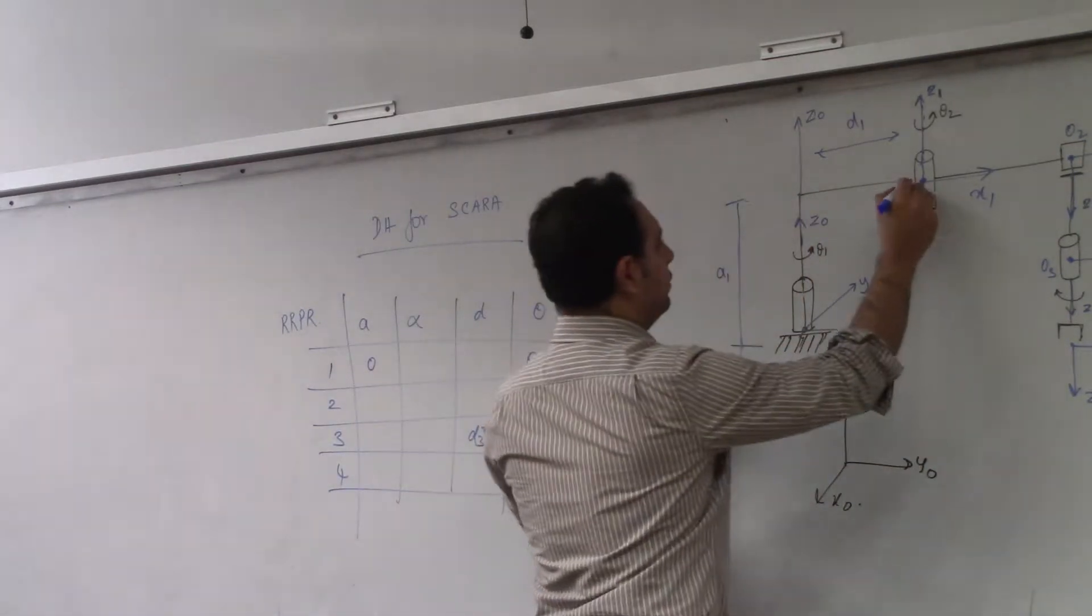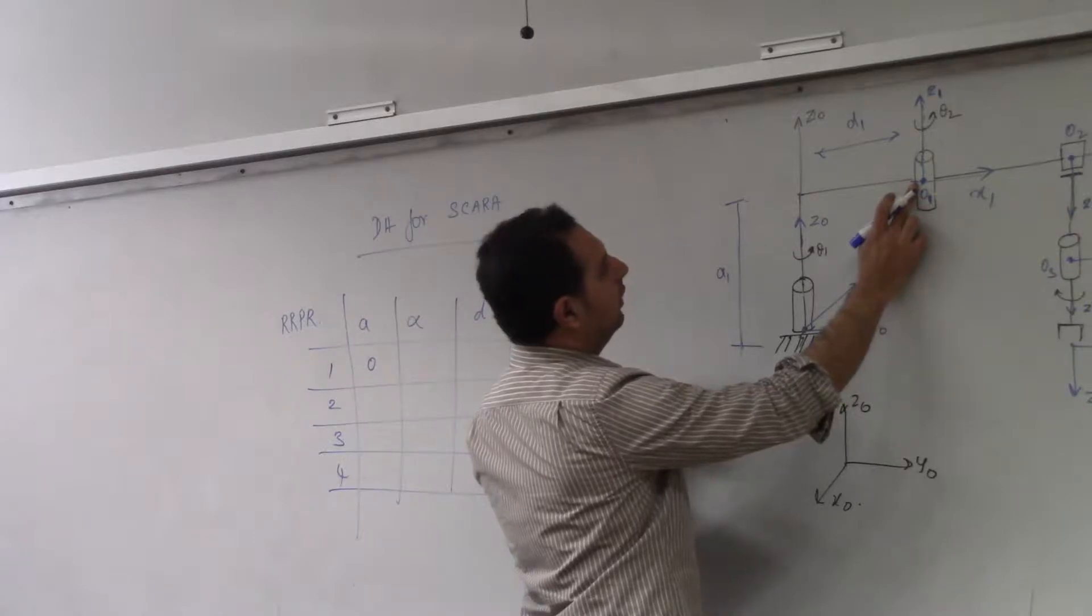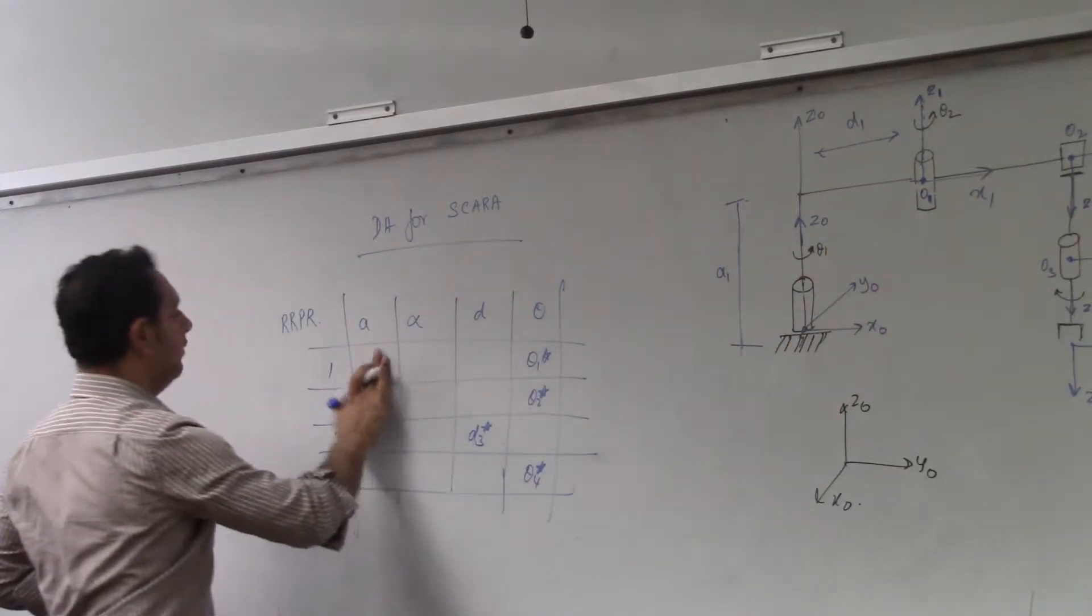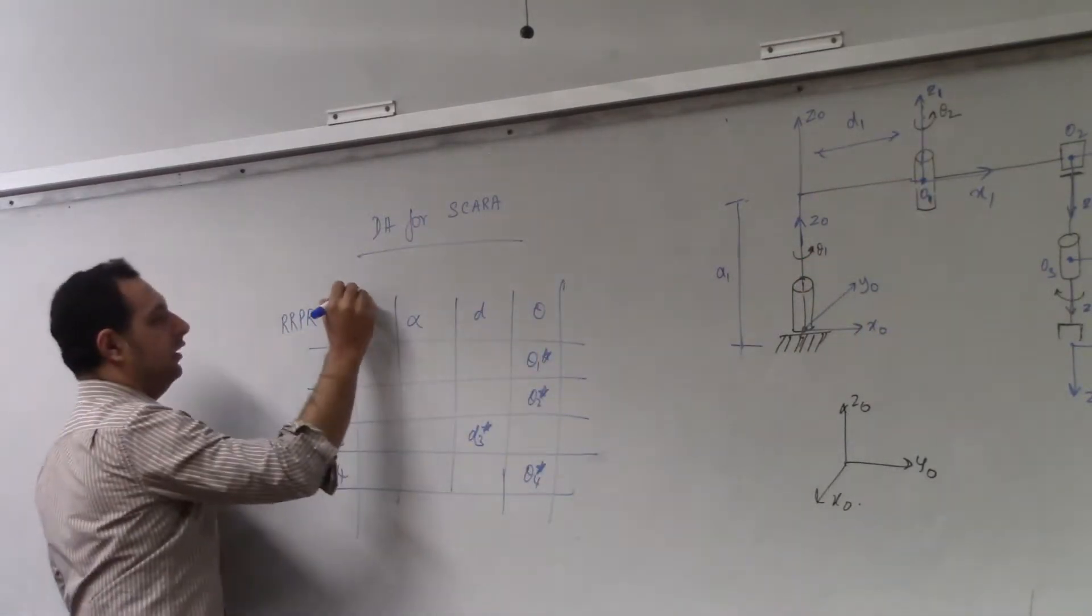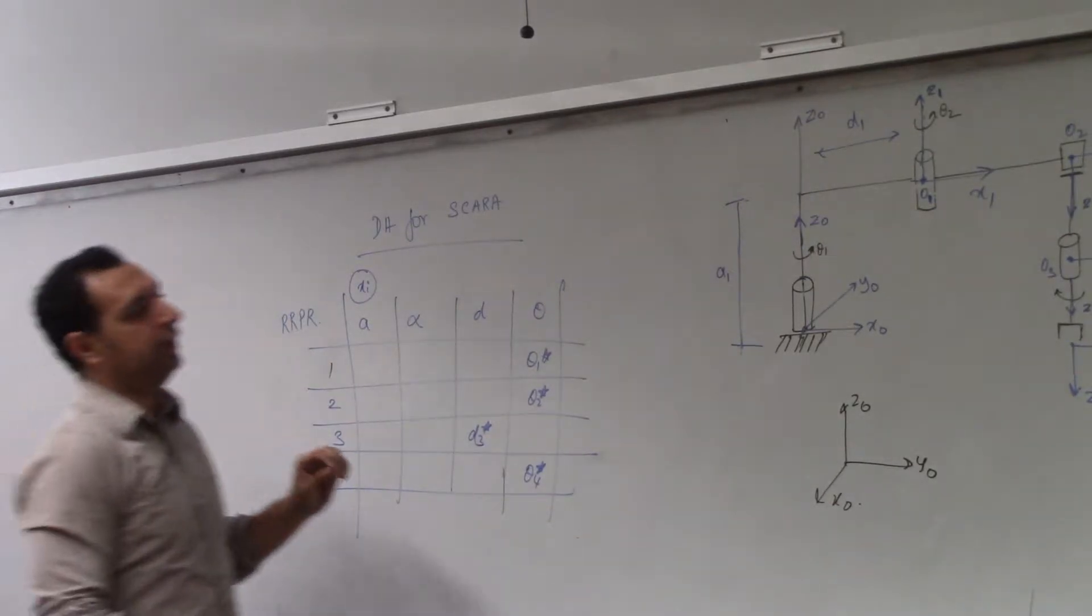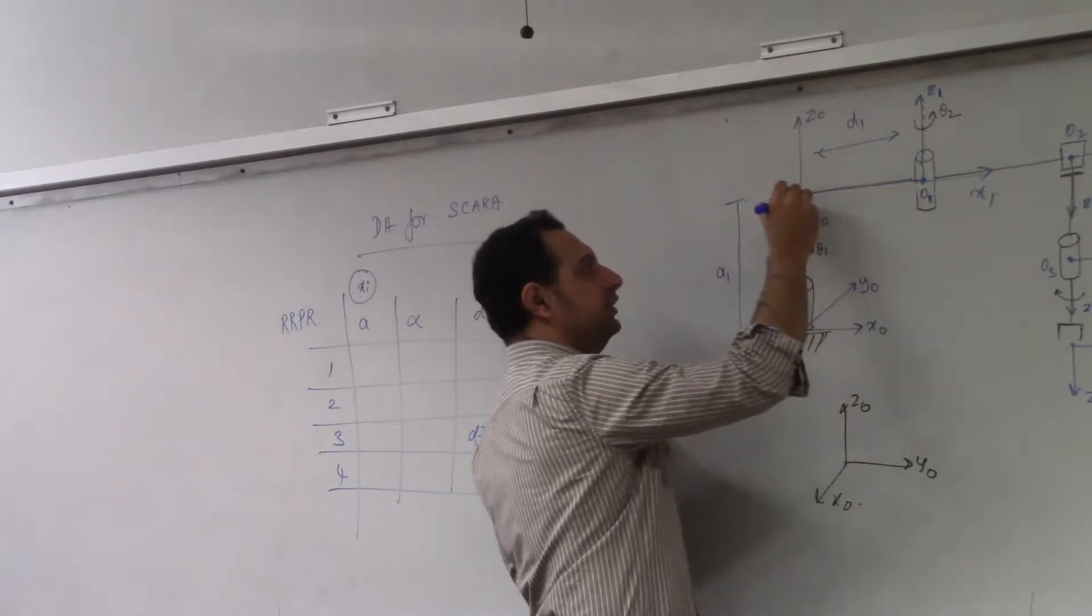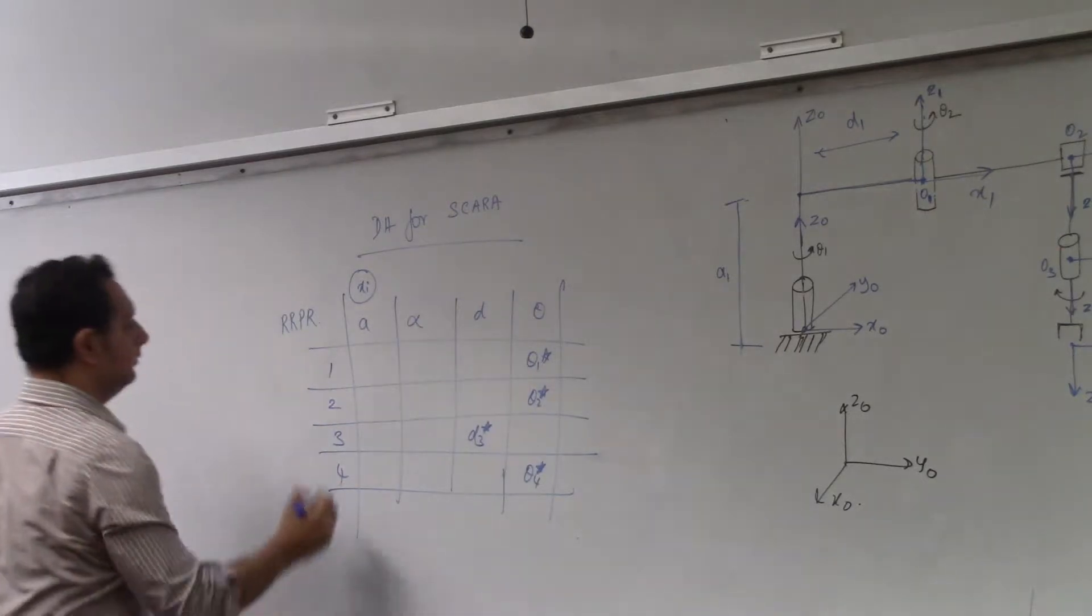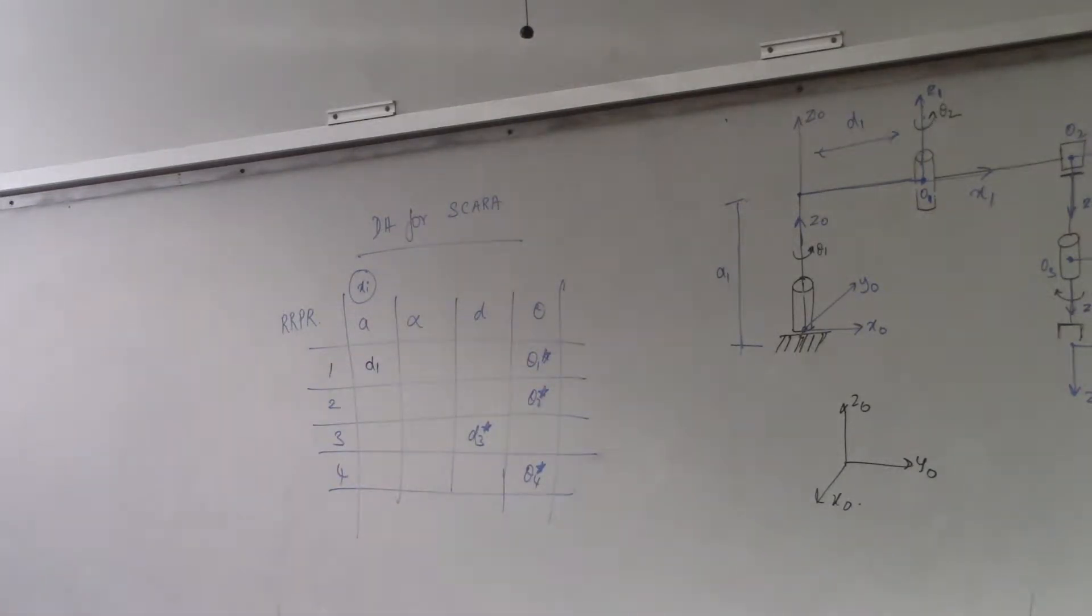So A1 is zero because you move along X1 and move A1. Okay, A1 is not zero. A1 is measured along XI, right? So you move along XI from here and you go until it intersects the previous EI. This distance is X1. Okay, whatever that is.